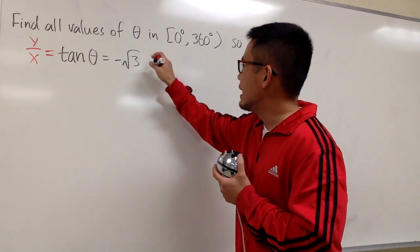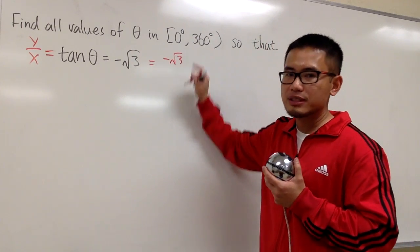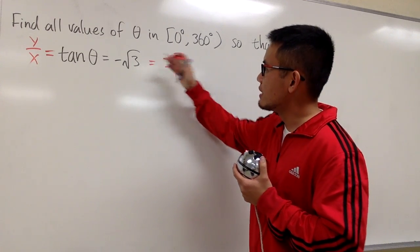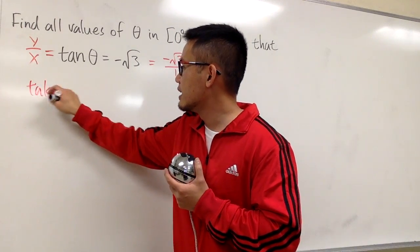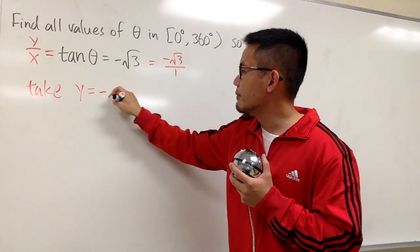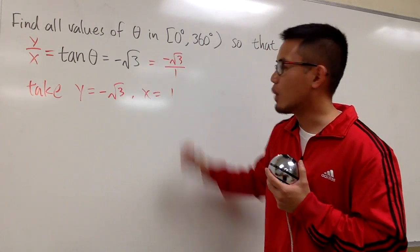Let me write this as -√3/1, with the negative on the top over 1. When we are looking at -√3 as this, let's first take y to be -√3 and x to be positive 1.